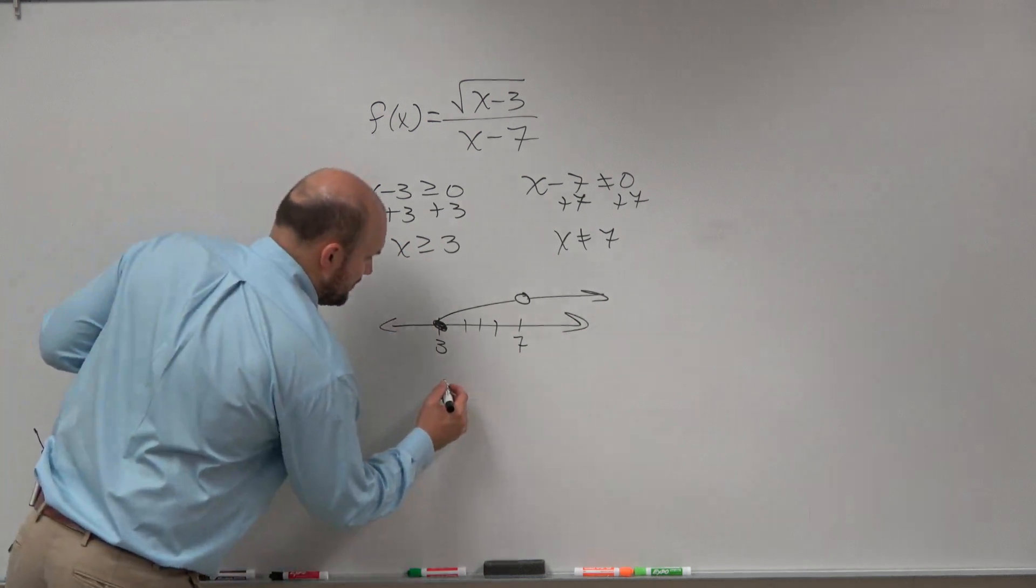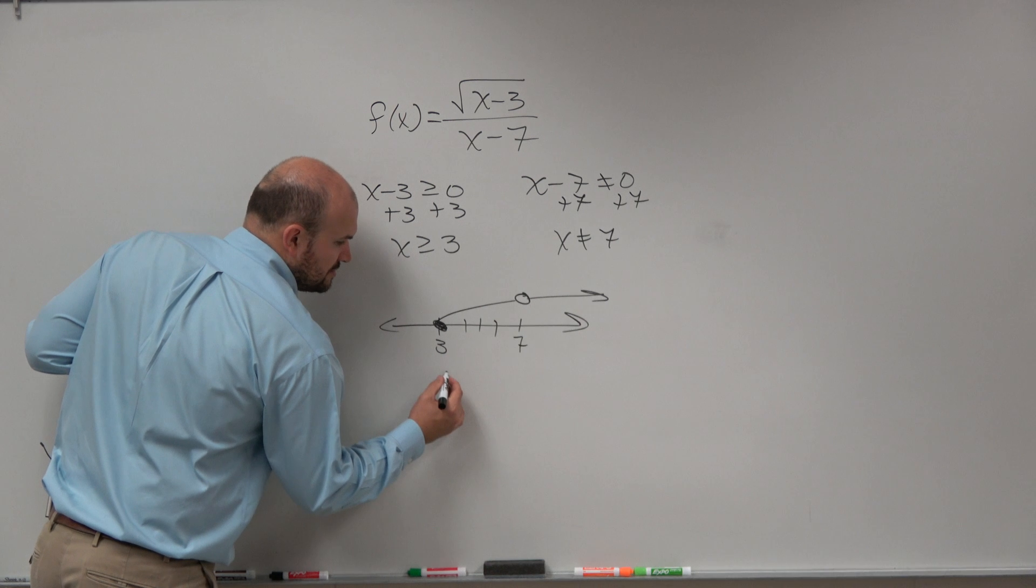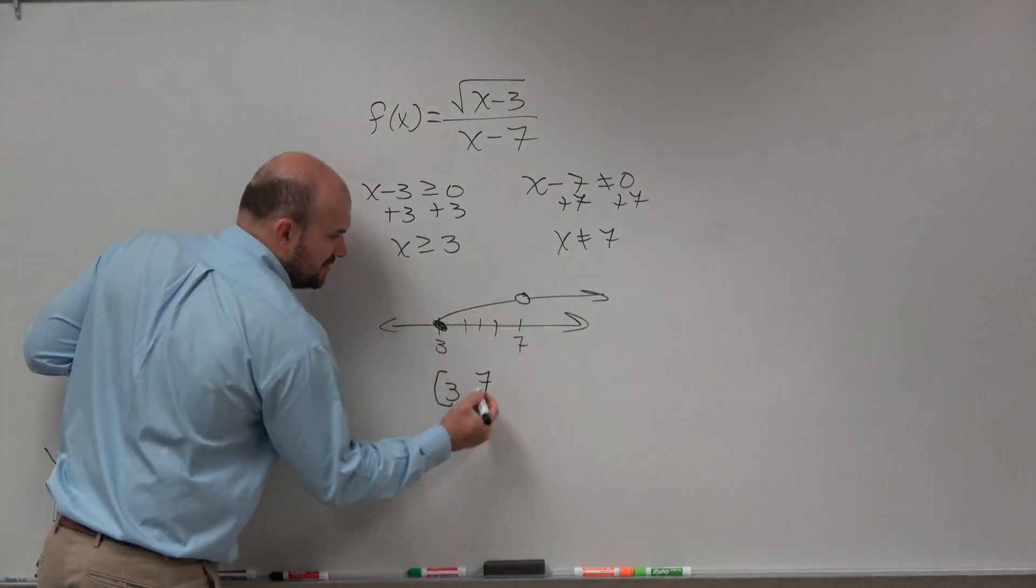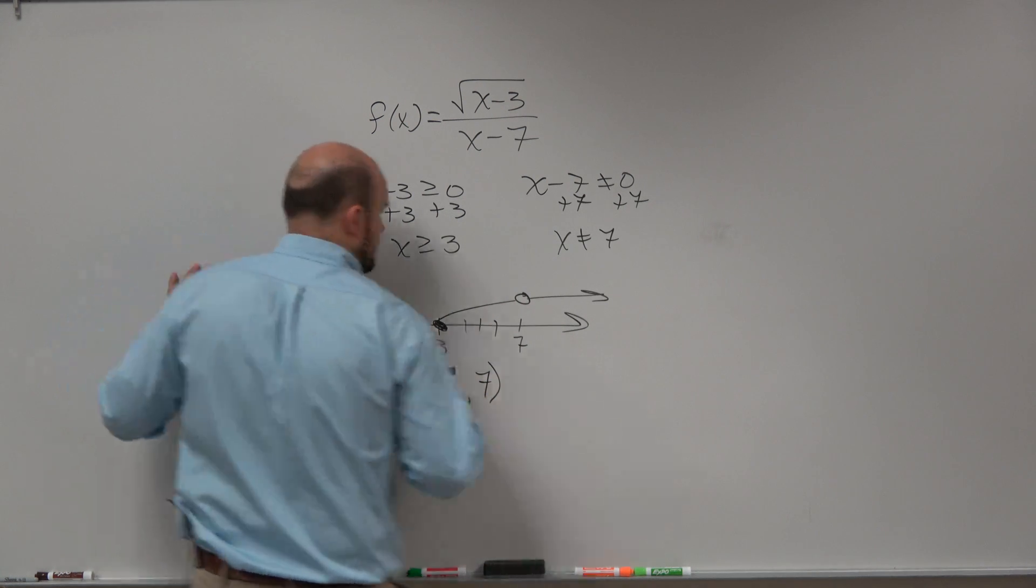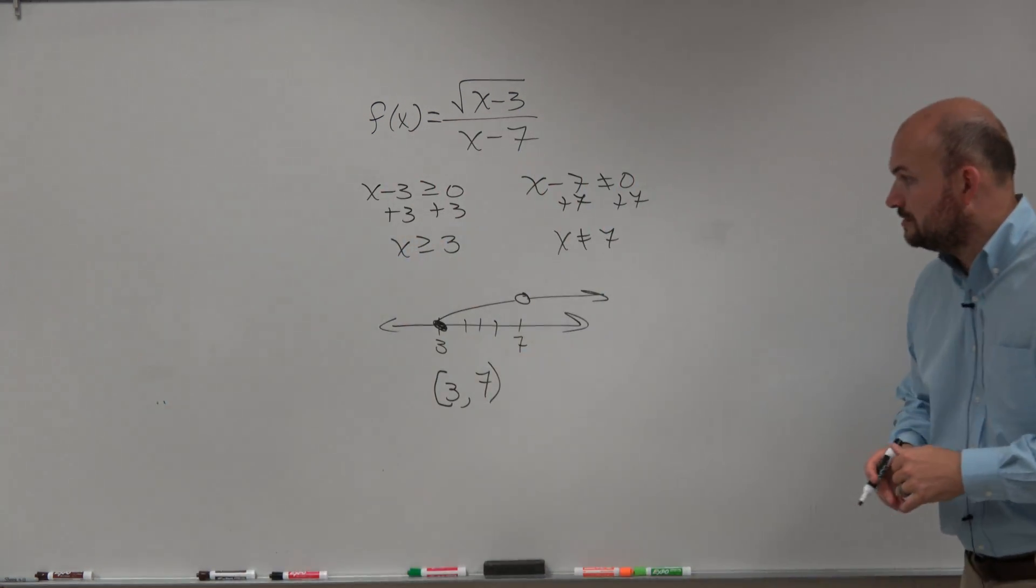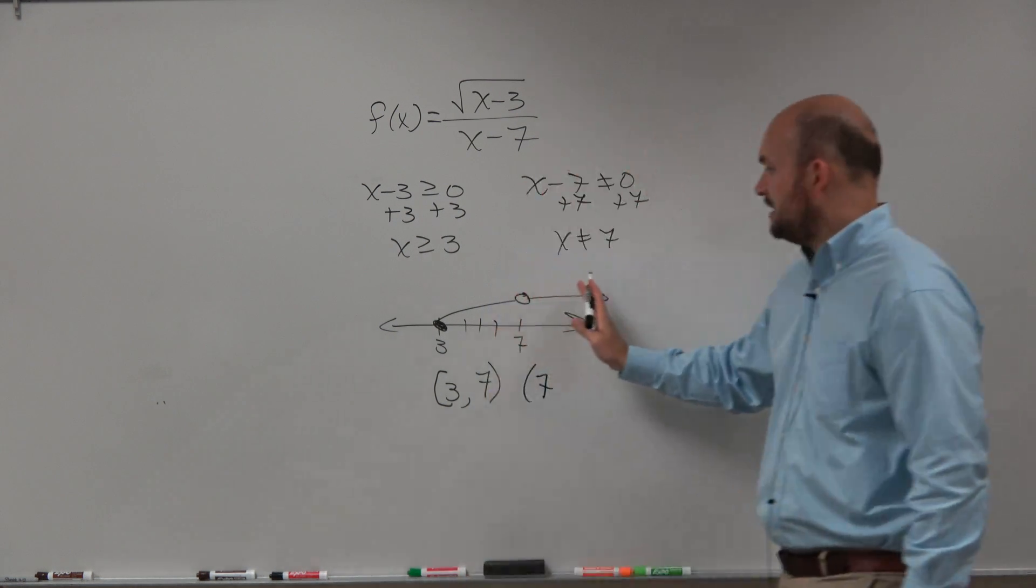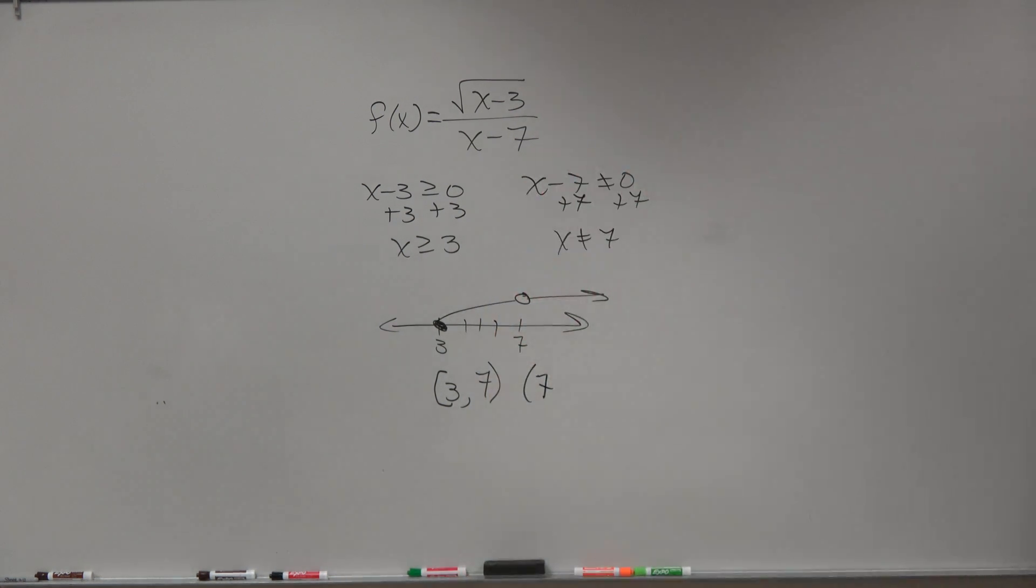And that's included or excluded? Excluded. So parentheses all the way to 7. Is 7 included? No. And then we hop over to the other side of the hole. And we say, OK, we're going to go from 7 all the way to infinity.